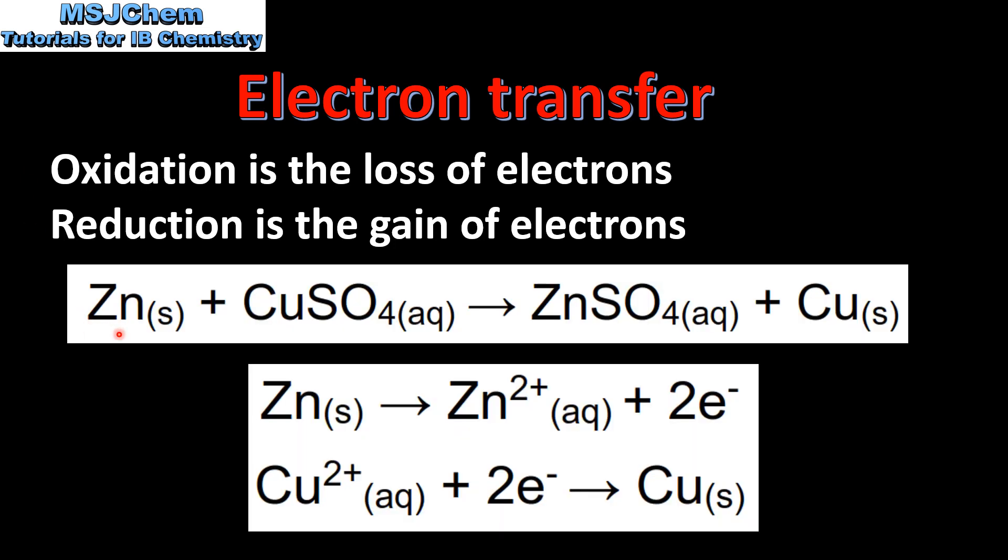In this reaction zinc reacts with aqueous copper sulfate to form zinc sulfate and copper. This is a displacement reaction in which the more reactive metal, zinc, displaces the less reactive metal copper from solution. The zinc atoms lose electrons to form zinc ions which is oxidation. The copper 2 plus ions gain electrons to form copper atoms which is reduction.